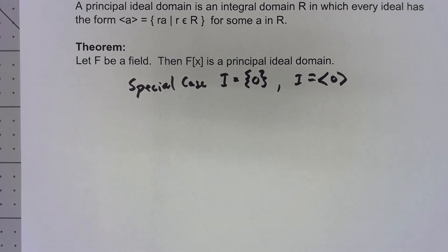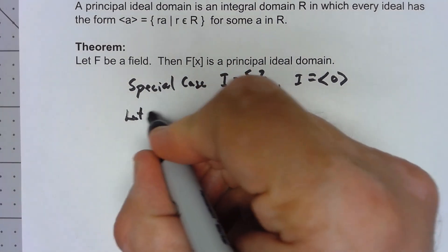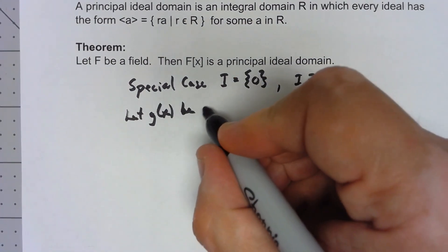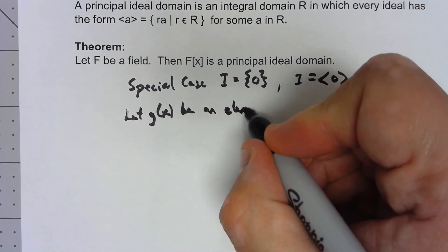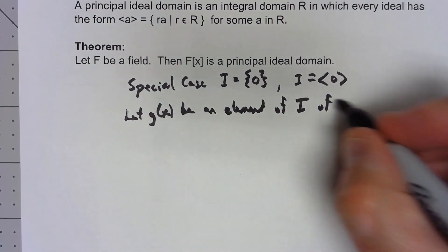In any other case, there's some nonzero element, and let's let g(x) be an element of I of minimum degree.